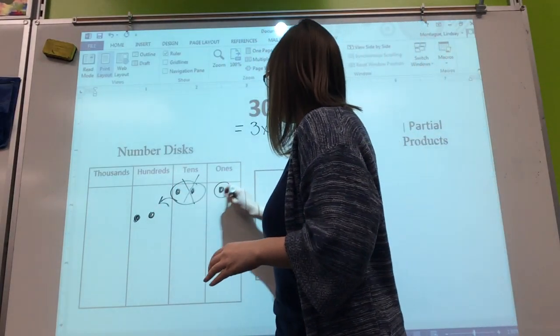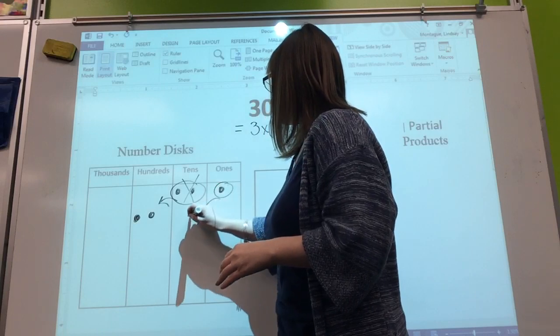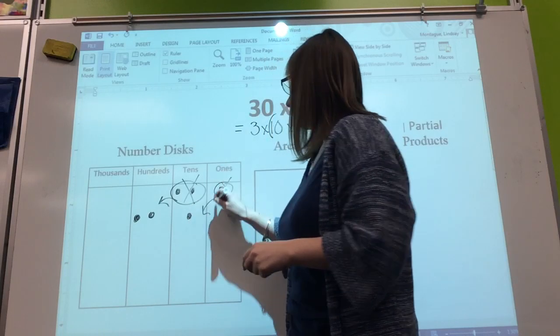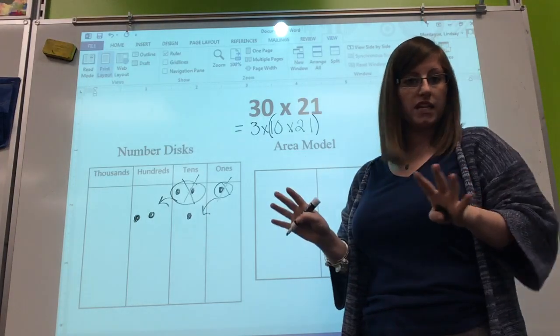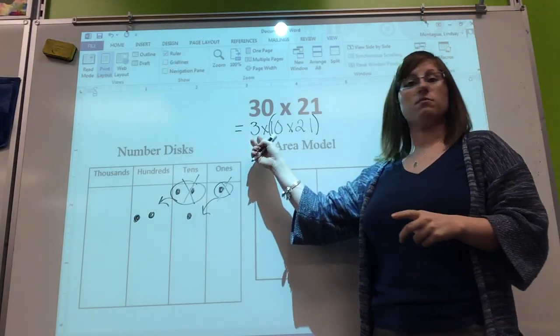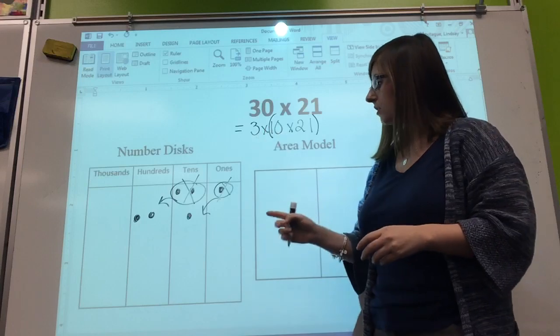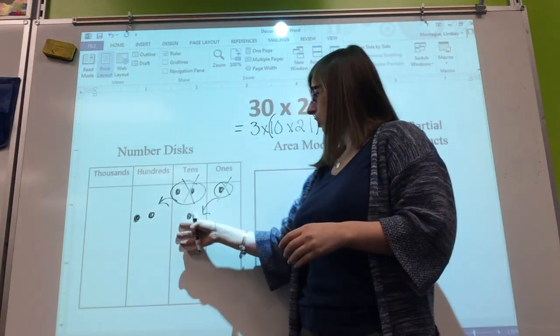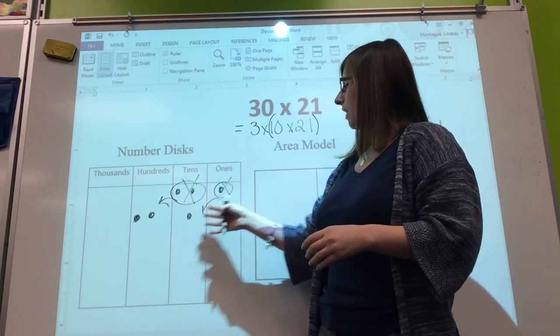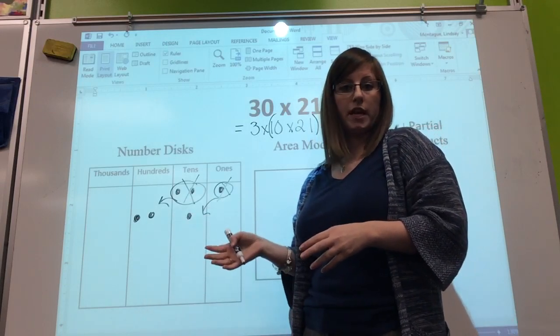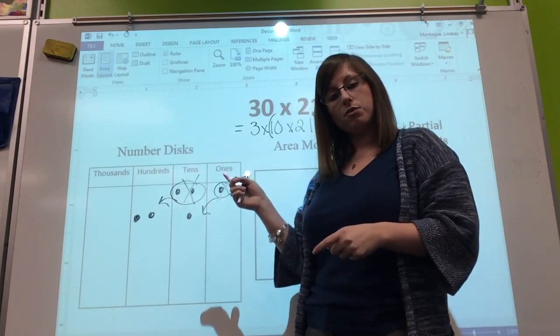Do the same for the ones, cross it out because we used them. So we've done 21 times 10 - that's done. Now I just have to multiply by 3. Right now I have 210, my new number after multiplying by 10.